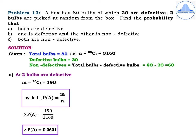Problem 13. A box has 80 bulbs of which 20 are defective. Two bulbs are picked at random from the box. Find the probability that: first subdivision, both are defective; second subdivision, one is defective and the other is non-defective; third subdivision, both are non-defective. Given: total number of bulbs is 80, so N = 80C2 = 3160. The number of defective bulbs is 20, so non-defective bulbs = 80 minus 20 = 60.